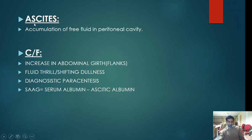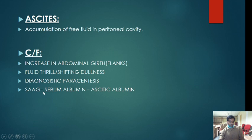Whenever a patient with ascites presents with increased abdominal girth, the first thing you should do is diagnostic paracentesis — an ascites tap. You should calculate SAAG, which is the serum albumin minus the ascitic albumin. This will tell whether the cause is portal hypertension or non-portal hypertension. SAAG is very important.